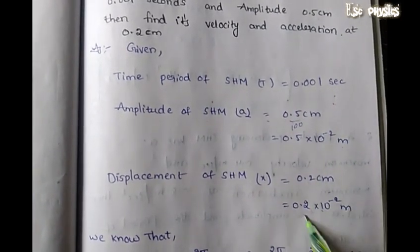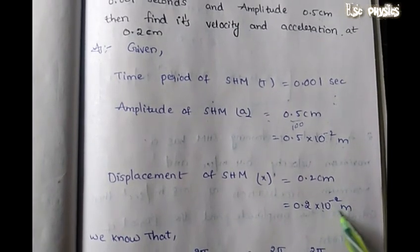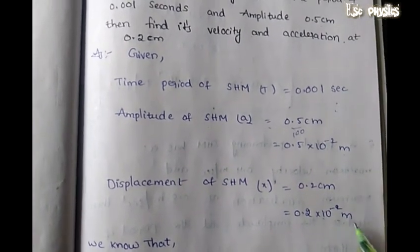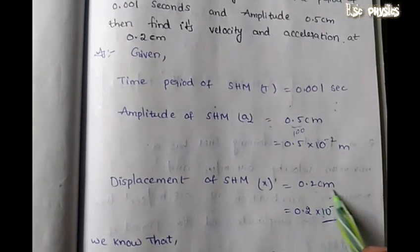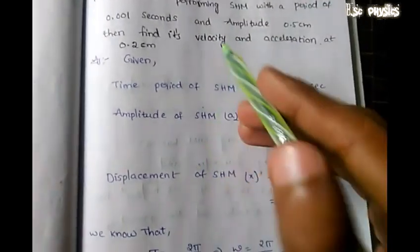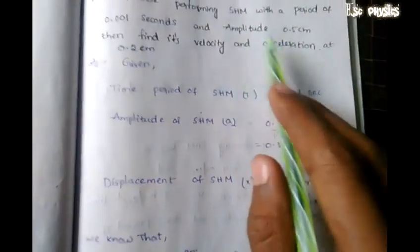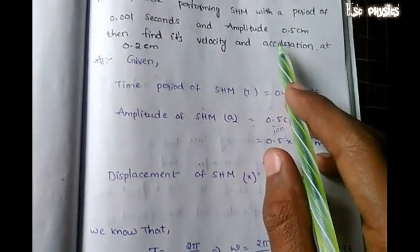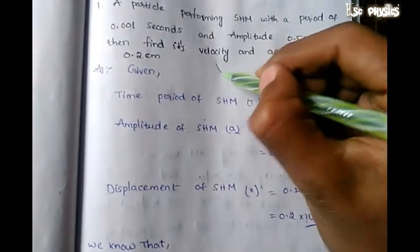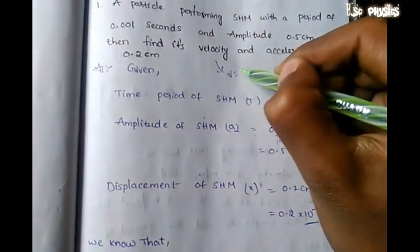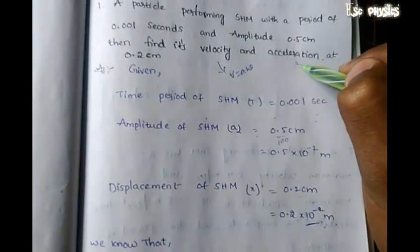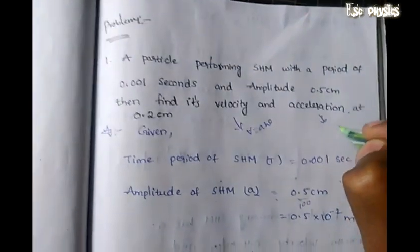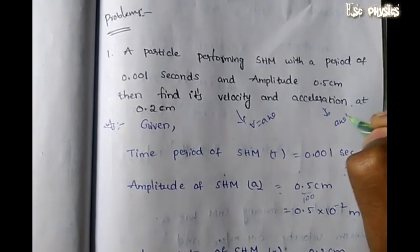So displacement is 0.2 into 10 to the power of minus 2 meters. Now we are going to discuss velocity and acceleration. For velocity, we have the formula v equals A omega. For acceleration, it is A omega squared.